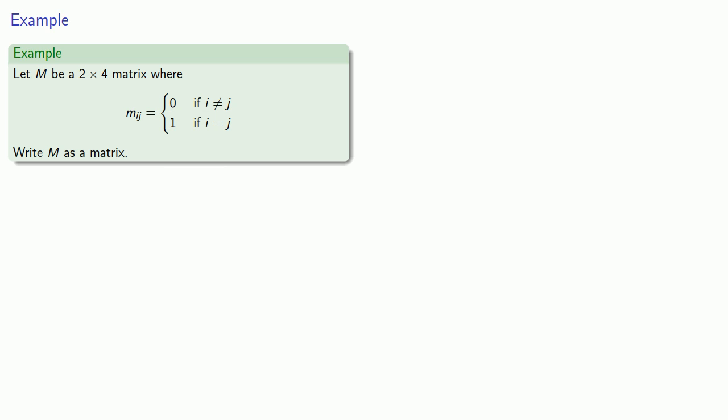So while this is a good description of M, we'll go ahead and fill it out in a more familiar form. And the first thing to note is that M is a 2 by 4 matrix, so it's going to have 2 rows and 4 columns.